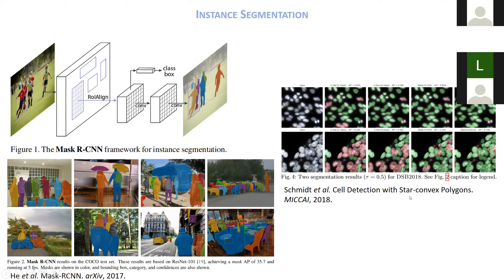This slide, from the StarDist paper — Martin Weigert presented over the summer — shows that instance segmentation approaches have also been applied to nuclei segmentation. StarDist gets very good results; Mask R-CNN is also quite good. U-Net with semantic segmentation works better with three classes than two, but still has some trouble with very tightly packed nuclei.